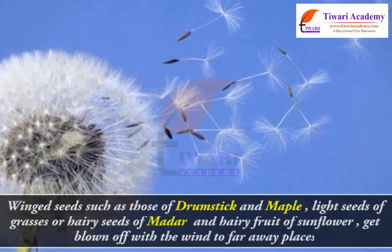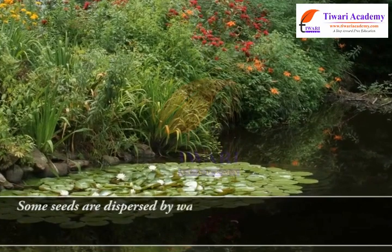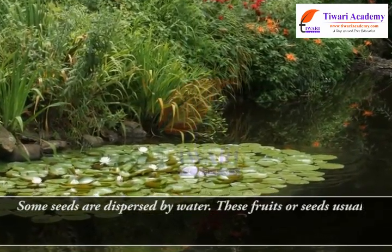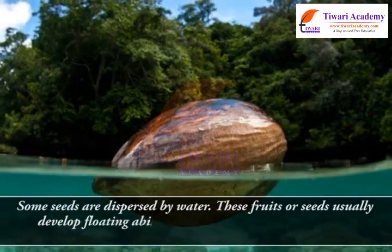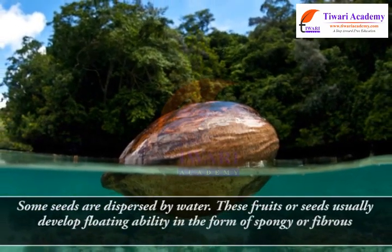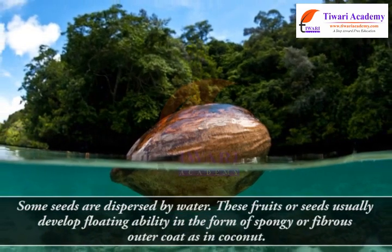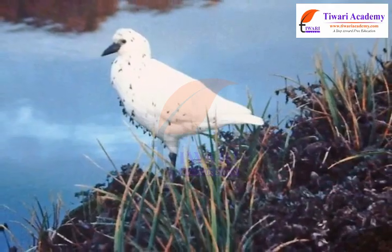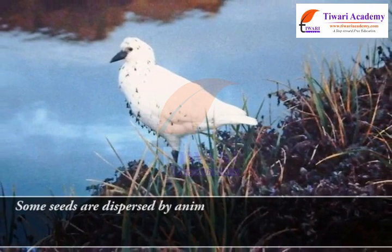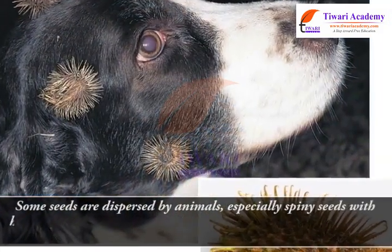Some seeds are dispersed by water. These fruits or seeds usually develop floating ability in the form of a spongy or fibrous outer coat, as in coconut. Some seeds are also dispersed by animals, especially spiny seeds with hooks.